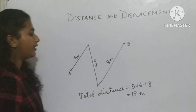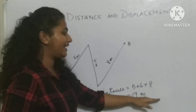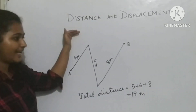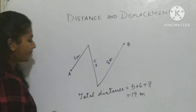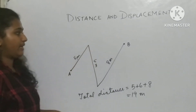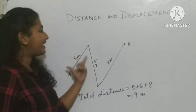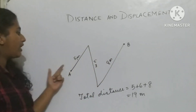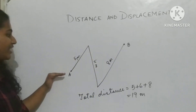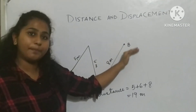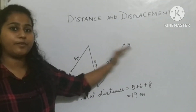Do not forget the unit — 19 meters. We do not write a direction here because distance is a scalar quantity and has no direction. Now, what is the displacement? The displacement is the shortest distance — the straight line distance from the initial position A to the final position B.